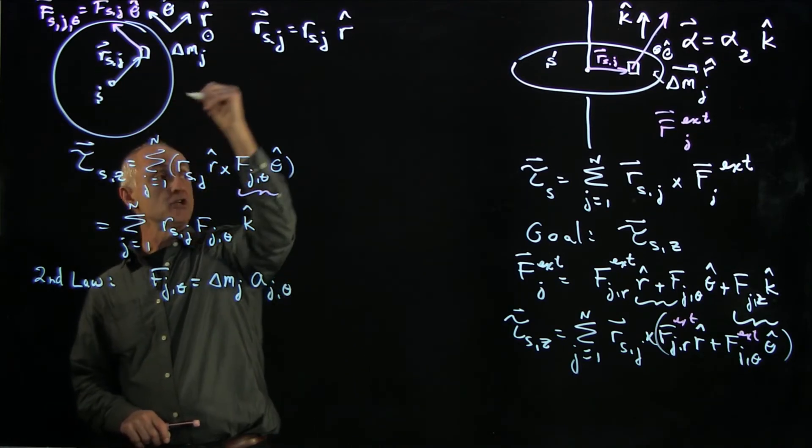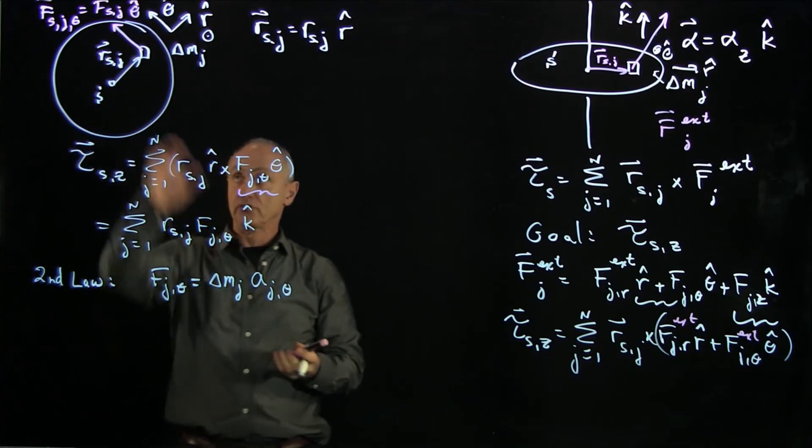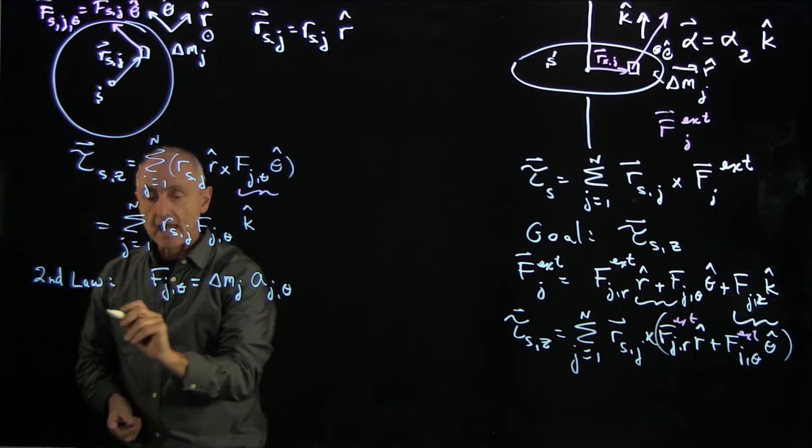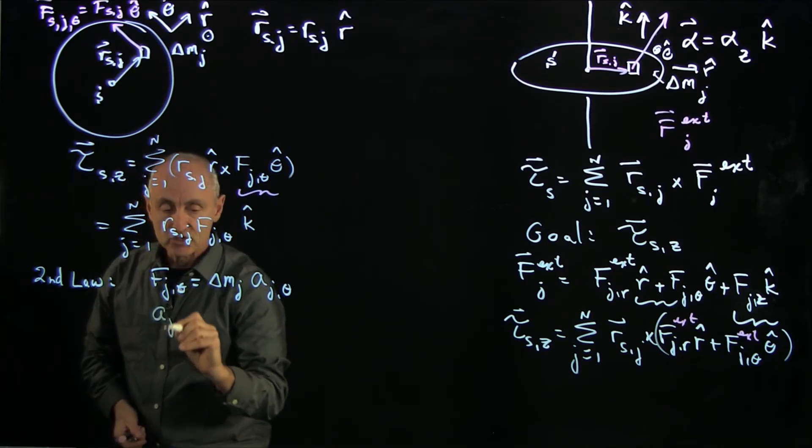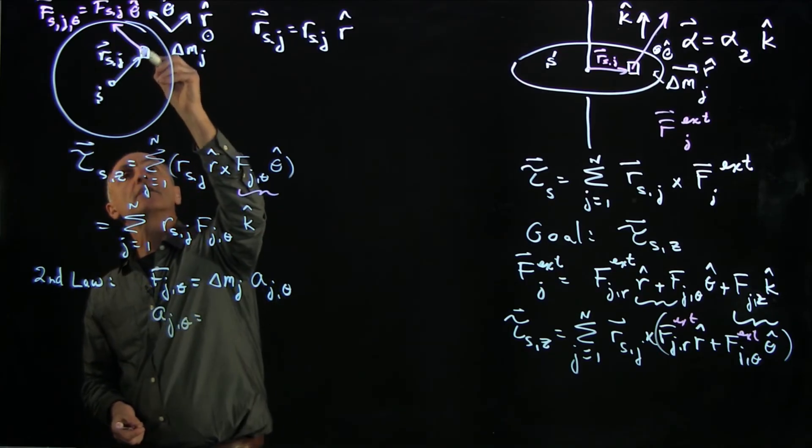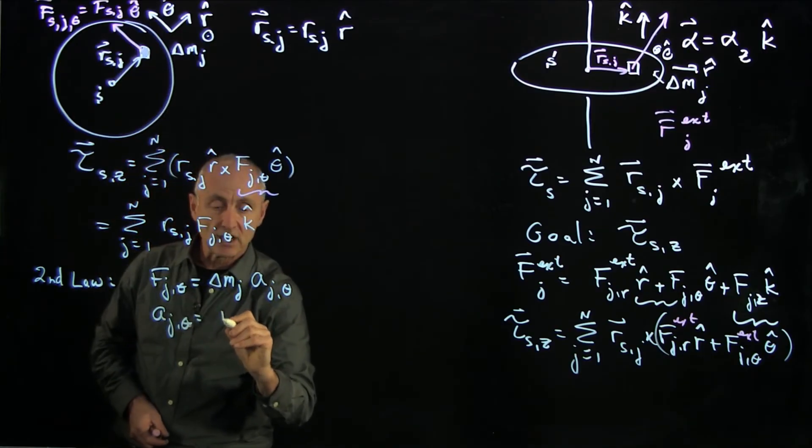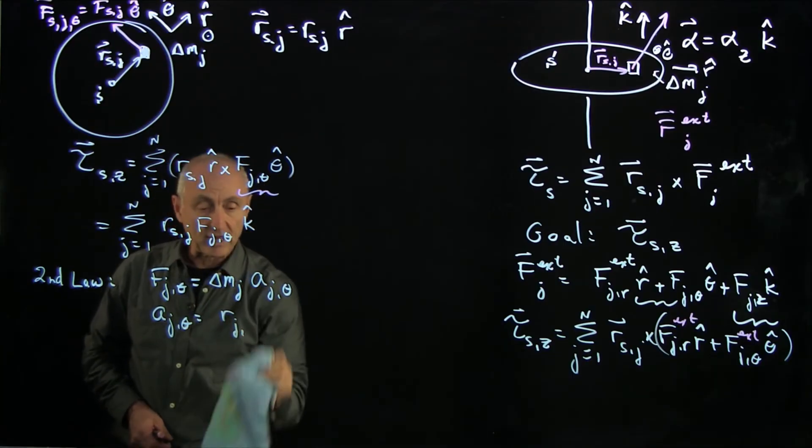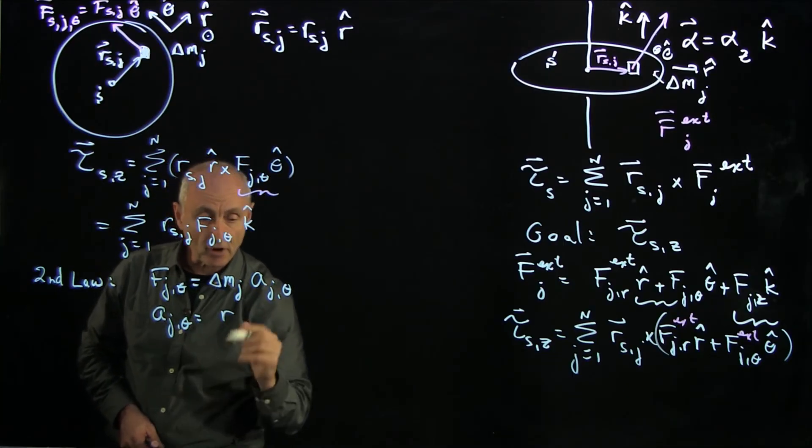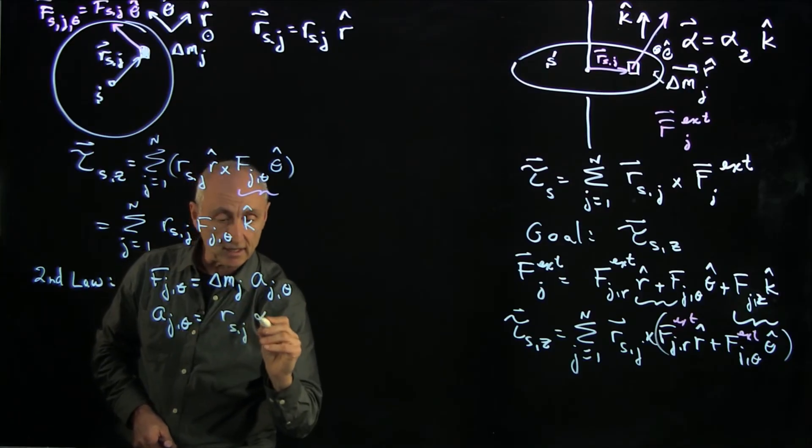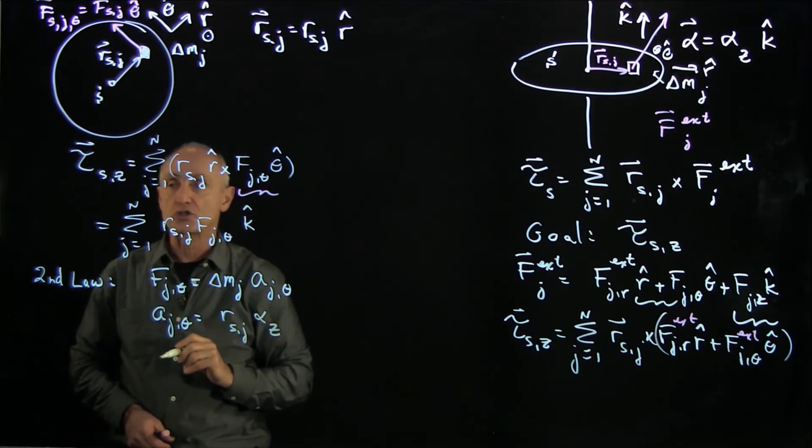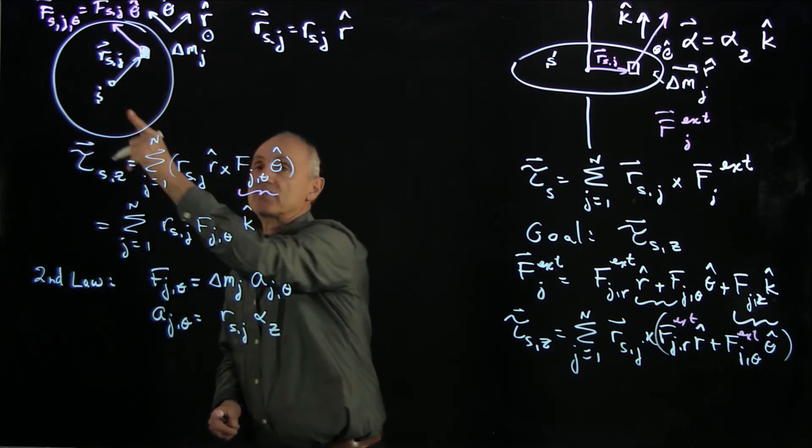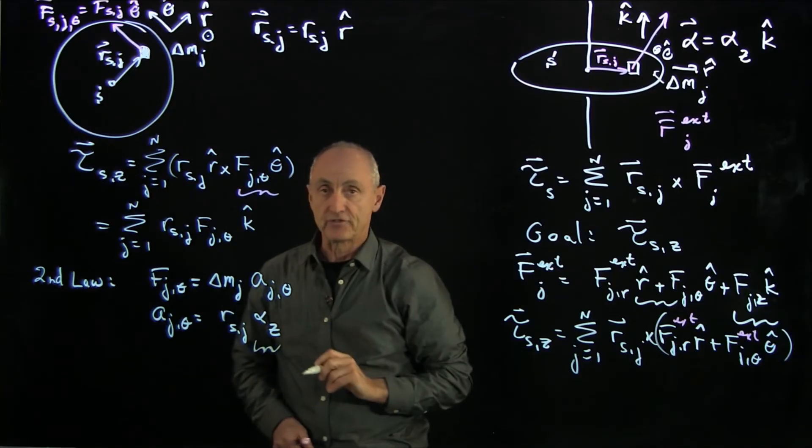Now, for this type of rotation about the z-axis, so when we're rotating about that z-axis, we know that a_j theta, so the acceleration of this tangential element, is just proportional to r_j, the distance from, well, we've called that r_sj. So how far away from the center. And here's the key thing. It's also proportional to the z-component of the angular acceleration. And every mass element in the body has the same alpha z.